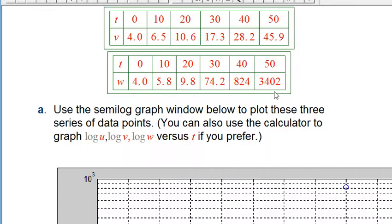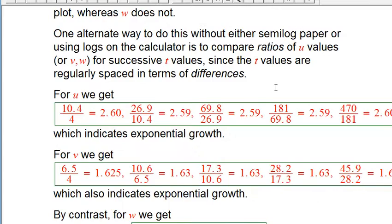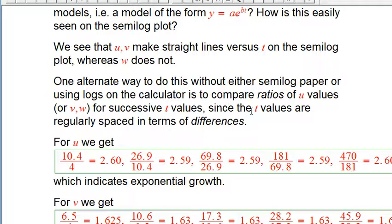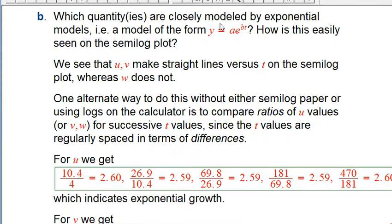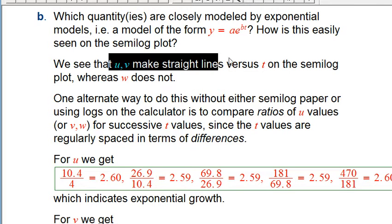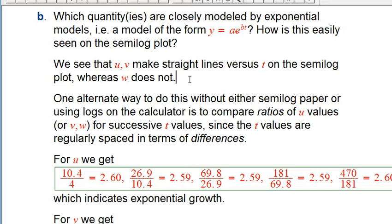So then the next question was which ones are modeled by exponentials? And we just did that. So u and v are straight lines on semilog, so they are modeled accurately by exponentials.